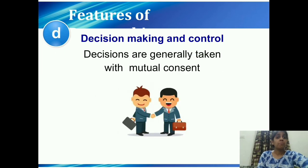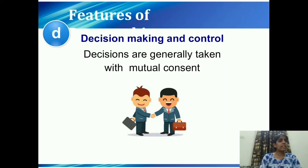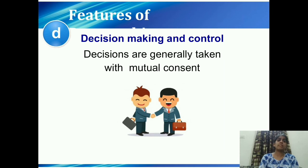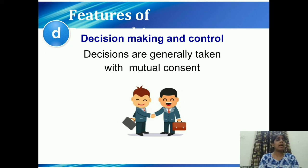The fourth feature is decision making and control — decisions are generally taken by mutual consent. If we are both partners, only one of us taking decisions will not do; we have to sit together, talk about the matter, and take the decision mutually. If I am denying a project, he cannot go for it, and vice versa. Both of us should have decisions mutually agreed. So control and decision making lies in the hand of both the partners or multiple partners.